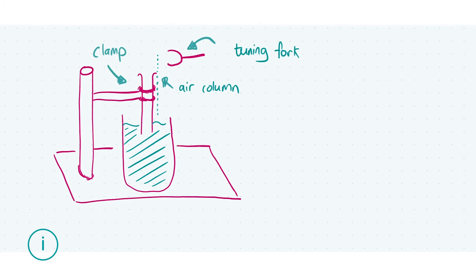This part of the question was worth a total of nine marks. The breakdown was: three marks for labeling the air column and the tuning fork; another three marks for showing any way of raising or lowering the resonance tube — in this case, the clamp on the retort stand; and a final three marks for the correct overall arrangement of the diagram.